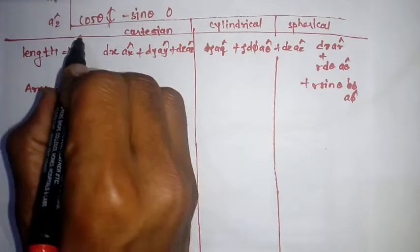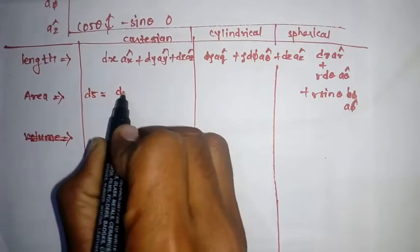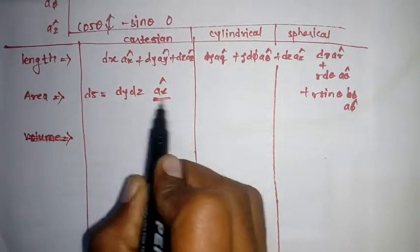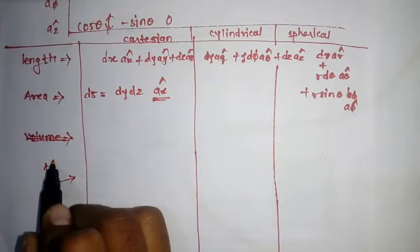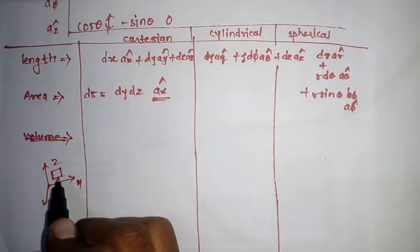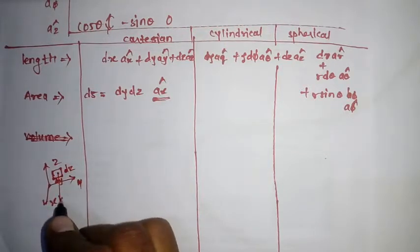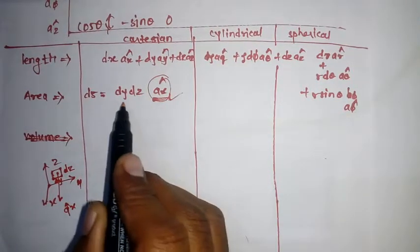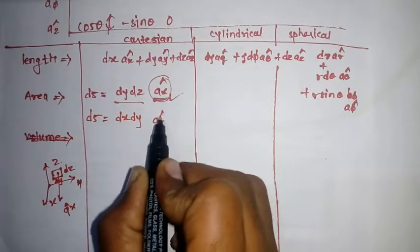For area, we have different formulas. In the Cartesian system, ds equals dy dz when a_x is the normal (perpendicular) vector. If you have z here, y here, x here — the plane is defined by y and z, dy and dz are the lengths, and a_x is the normal vector. Similarly, ds equals dx dy when a_z is normal, and ds equals dz dx when a_y is normal.